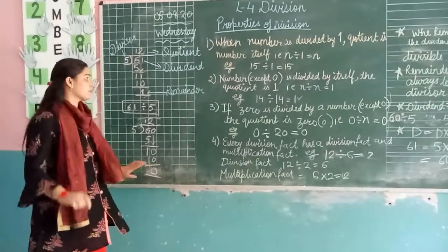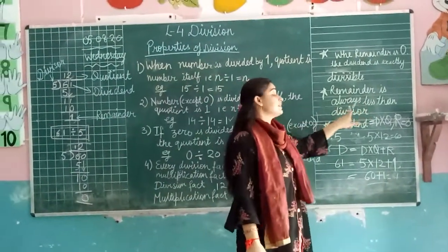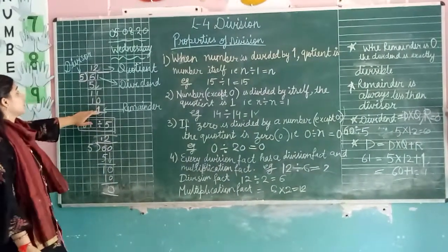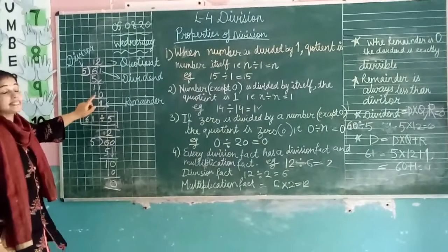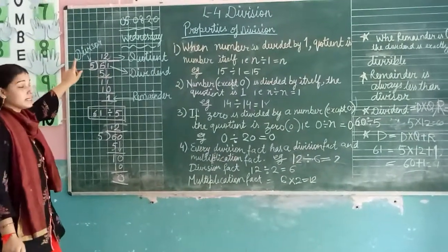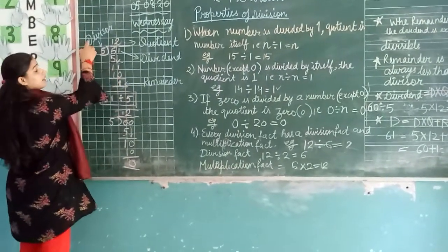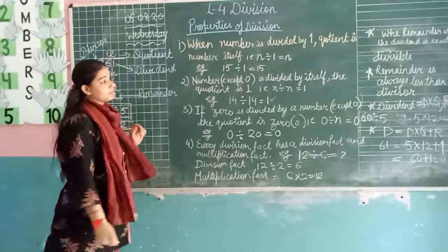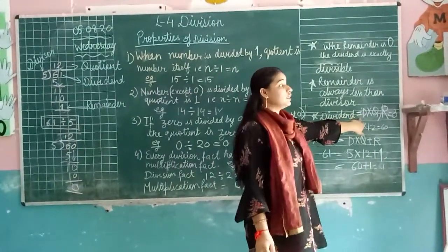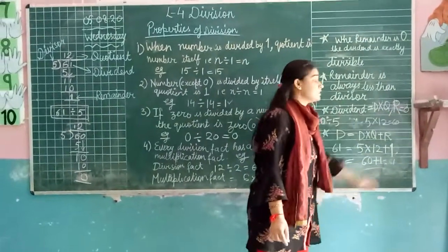The remainder is always less than the divisor. Jo remainder hota hai, it will always be less than the divisor. Next, when the remainder is 0, the dividend is equal to divisor multiplied by the quotient.